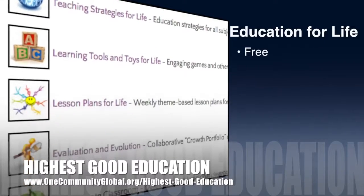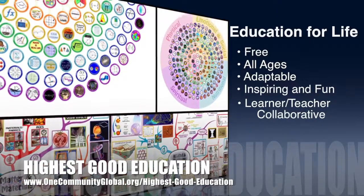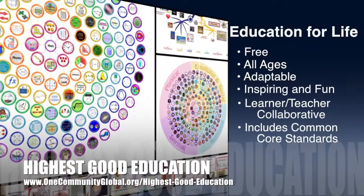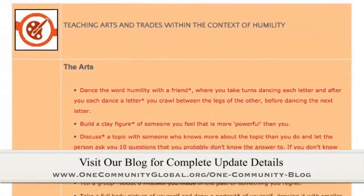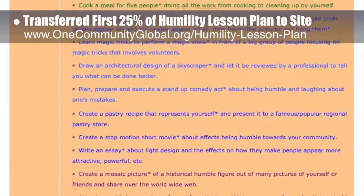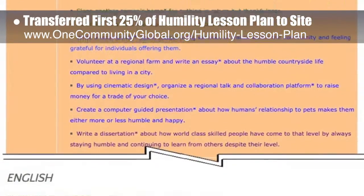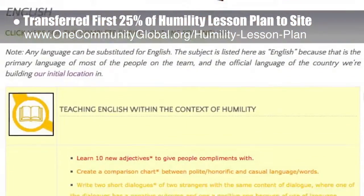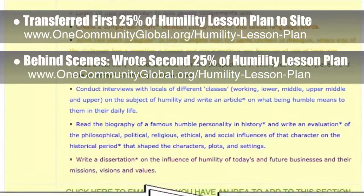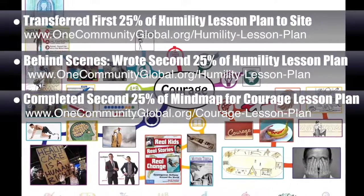One Community's approach to highest good education is open source, free, shared, designed for all age groups, adaptable to any schooling environment, inspiring and fun, a learner-teacher collaborative, and includes common core standards. This week the core team transferred the first 25% of written content for the humility lesson plan to the website, wrote the second 25% behind the scenes, and completed the second 25% of the mind map for the courage lesson plan, bringing it to 50% complete.